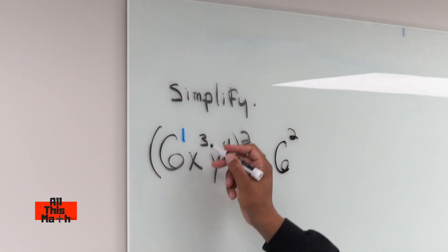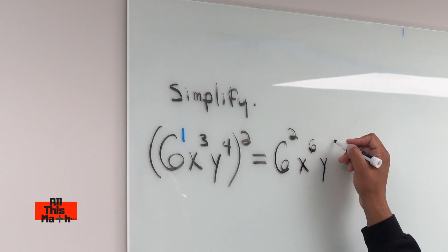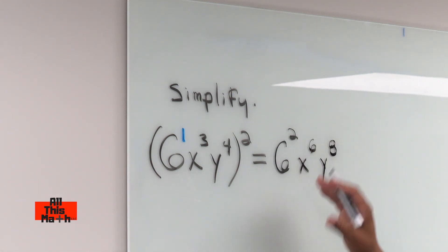We're going to do 3 times 2, which is going to give us x to the sixth, and we're going to do 4 times 2, which is going to give us y to the eighth. Now we just need to simplify 6 squared.